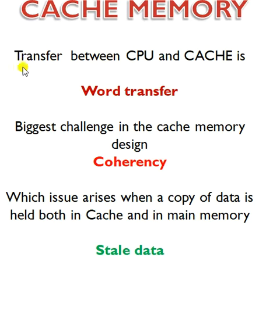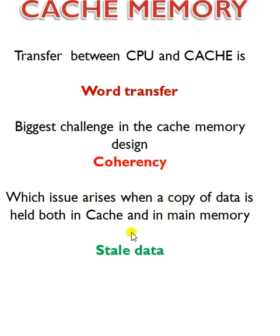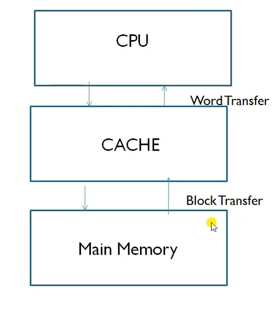The answers: transfer between CPU and cache is known as word transfer. The biggest challenge in cache memory design is coherency. And the issue that arises when a copy of data is held both in cache and in main memory is known as stale data.